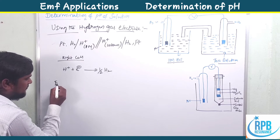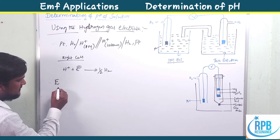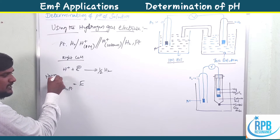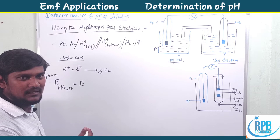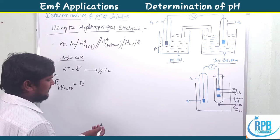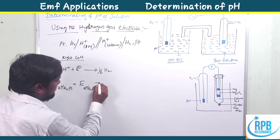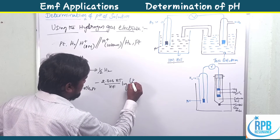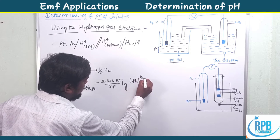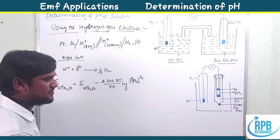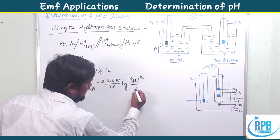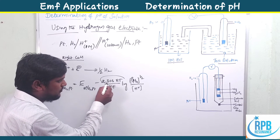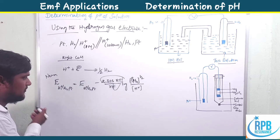Now let's write the EMF value. E cell for H+ | H2 | Pt. From the Nernst equation: E = E° − (2.303RT/nF) × log([product]/[reactant]). So E(H+/H2/Pt) = E°(H+/H2/Pt) − (2.303RT/nF) × log(P(H2)^(1/2) / [H+]). We know that 2.303RT/F = 0.0591 at 25°C.